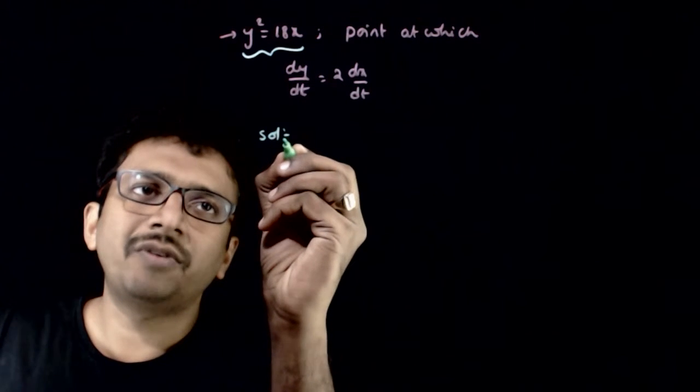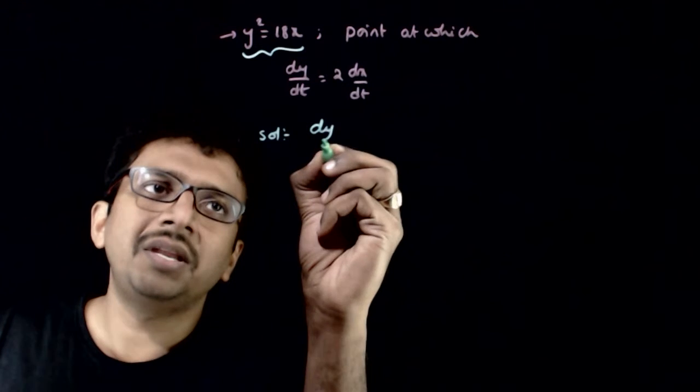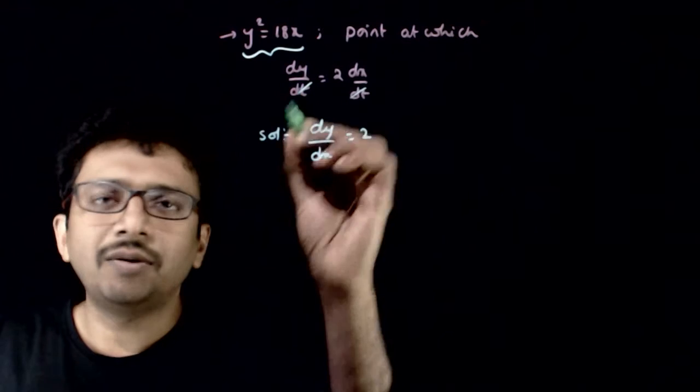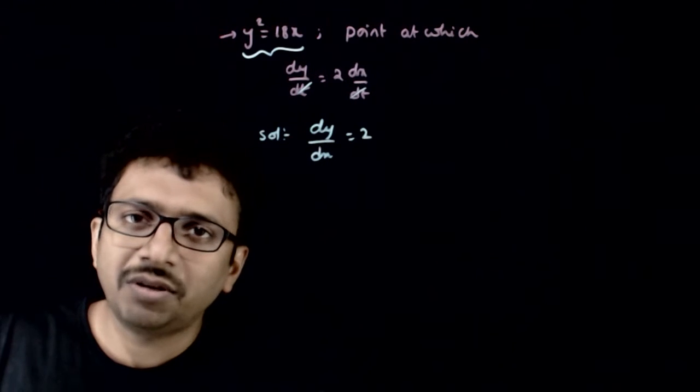So again, a very straightforward question. What is the meaning of this? The meaning of this is nothing but dy by dx has to be equal to 2. If you cancel this dt out, dy by dx has to be equal to 2.